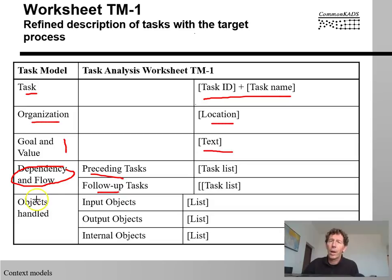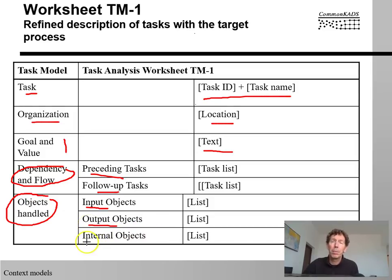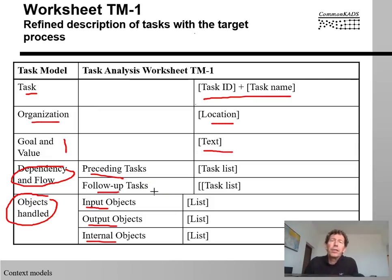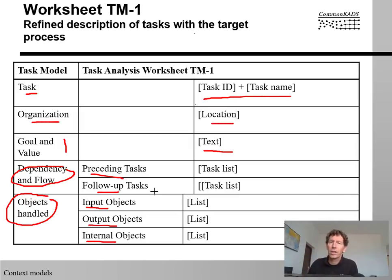Finally, we're going to describe for each of the tasks what are the objects being handled in that task — what objects are going into the task, what objects are coming out of the task, and what are the objects being manipulated internally in the task in order to get from input to output. And of course, I am not completely free to make up these tasks at this stage. I have to stick to the tasks that I have identified in the worksheets of the organizational model.